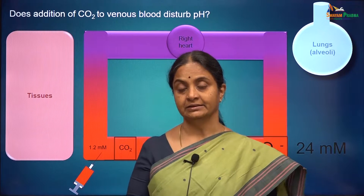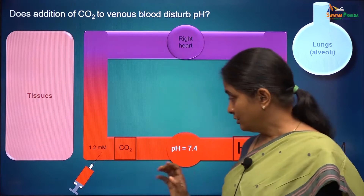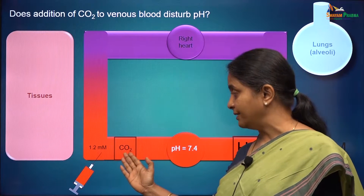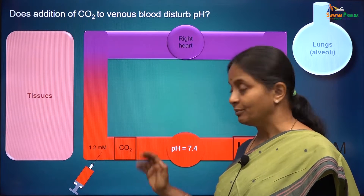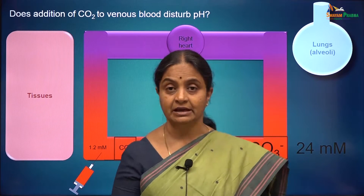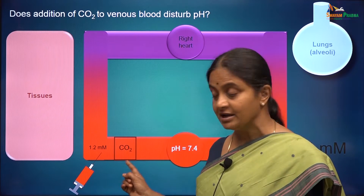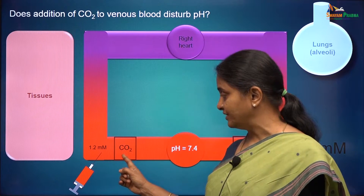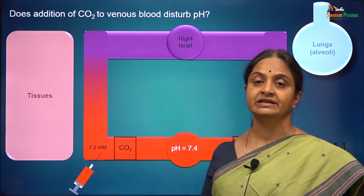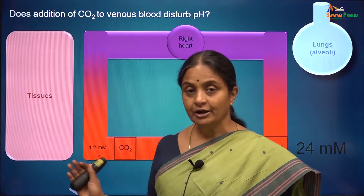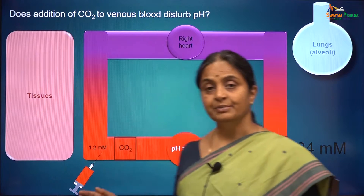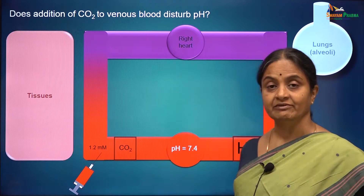That does not happen in blood either. Therefore the increase in pH due to addition of bicarbonate is kept at bay because of the presence of carbon dioxide in arterial blood. The lungs titrate the amount of carbon dioxide that enters arterial blood so as to maintain the ratio of carbon dioxide to bicarbonate at 20, and therefore you get a pH of 7.4. So carbon dioxide and bicarbonate in the right amounts balance each other to maintain pH of arterial plasma at 7.4.